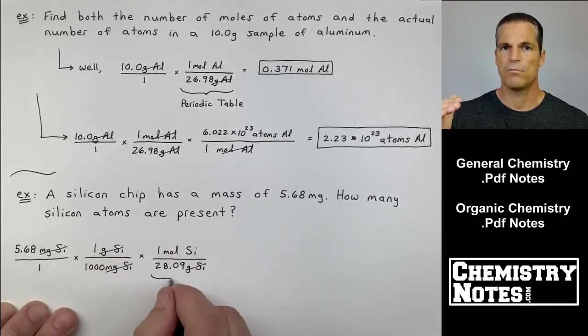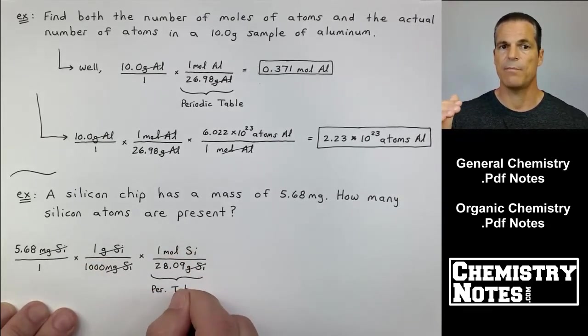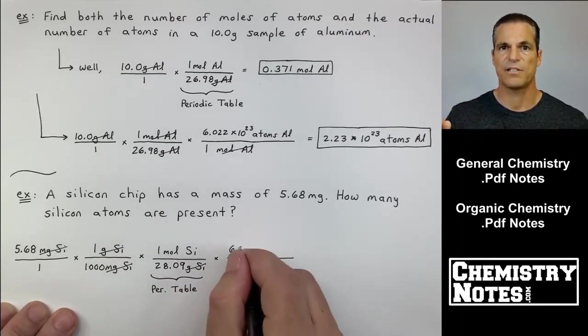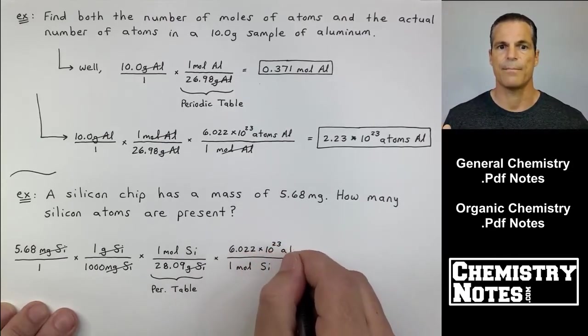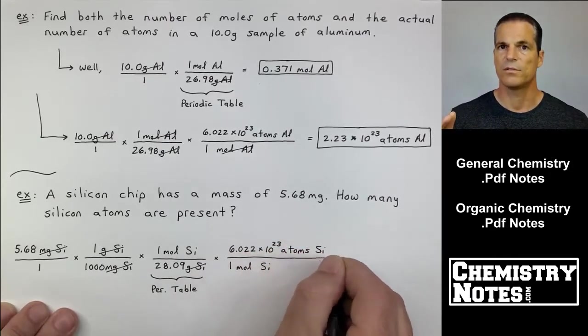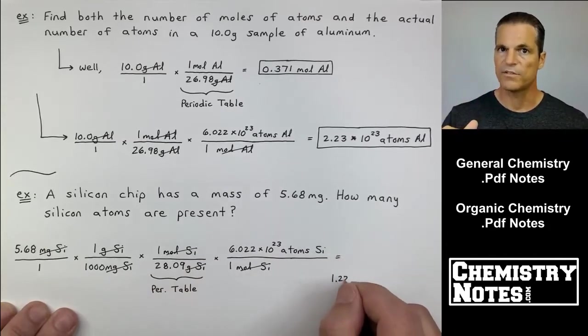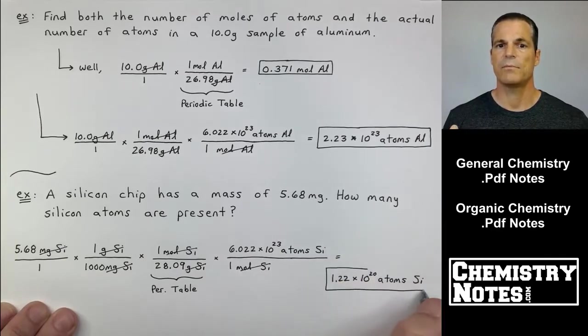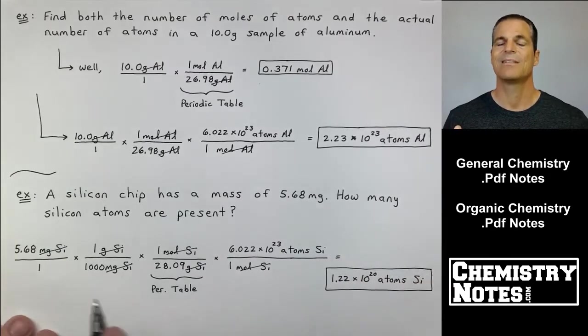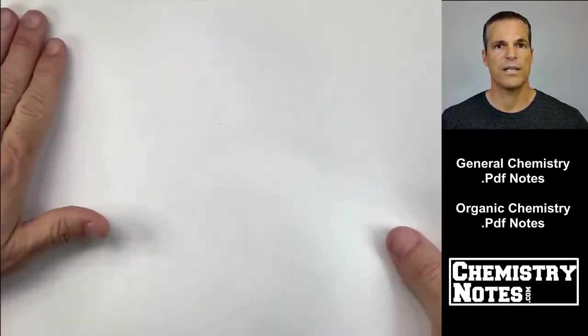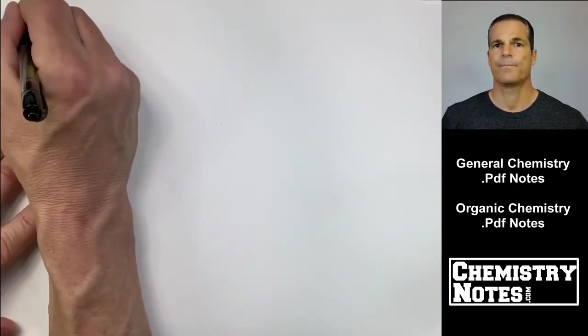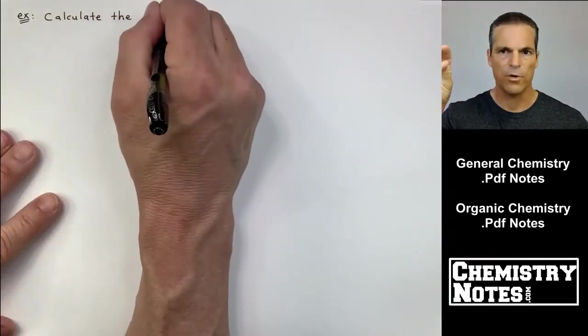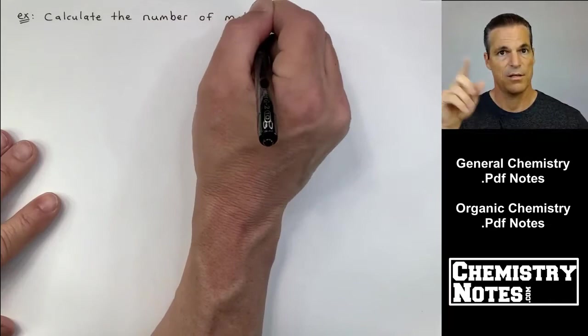Now that I'm in grams, I want to go to moles. I use the periodic table. Follow the units. I want to cancel grams. So 28.09 grams of silicon's on the bottom, one mole of silicon on top. Now I'm in moles. One step left. For every one mole of silicon atoms on the bottom in the denominator, my numerator is 6.022 times 10 to the 23rd atoms. 1.22 times 10 to the 20 atoms of silicon. See how I'm just following the units. The previous numerator is now going to be the units for my denominator. Then I cancel. The last numerator in that left to right movement is my unit.